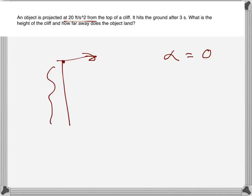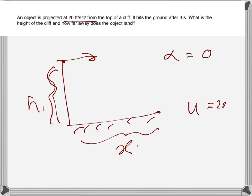So maybe it lands here and we need to find this distance, which let's say x, and we need to find the height h. Now u is given 20 feet per second.